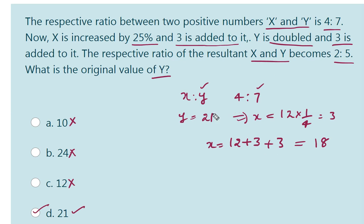Next Y is doubled. What is the original value of Y? 21. 21 into 2, that is equal to 42. And 3 is added to it plus 3, that is equal to 45. So the current value of Y is 45.